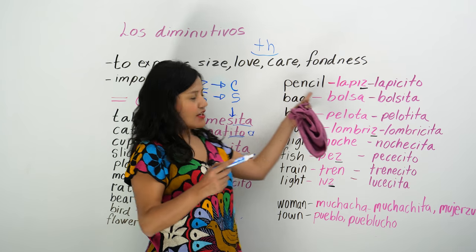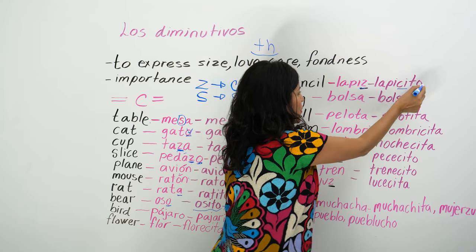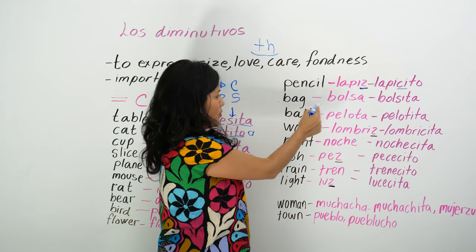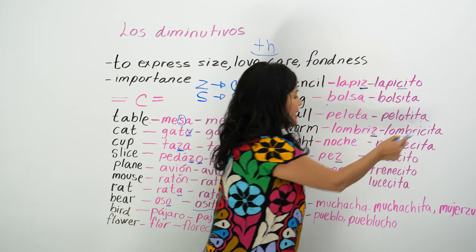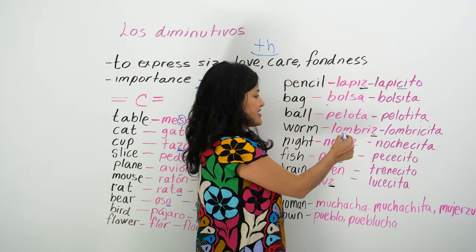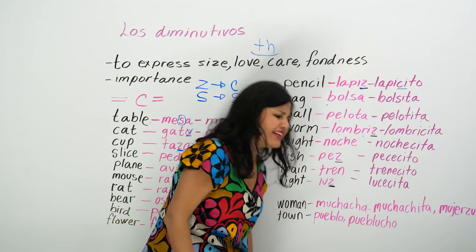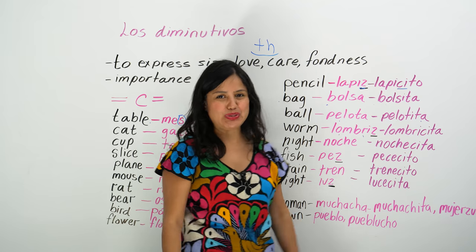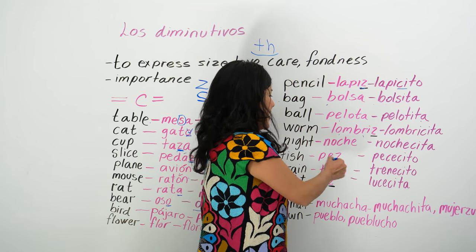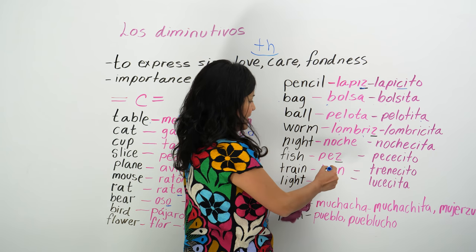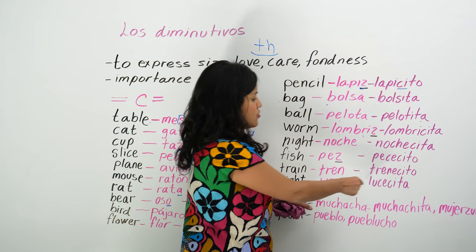Pencil — lápiz — becomes lapicito. Bag — bolsa — becomes bolsita. Ball — pelota — becomes pelotita. Worm — lombriz — becomes lombrizita. 'Ay qué bonita lombrizita, dame una, me puedo comer una?' Fish — pez — becomes pececito. Train — tren — becomes trencito. Light — luz — becomes lucecita.